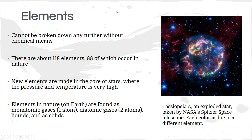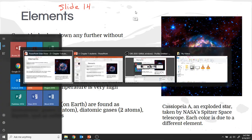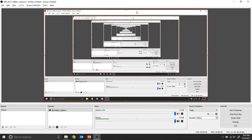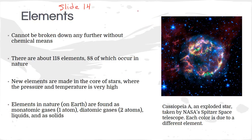We're going to pick up with slide 14 in chapter 1 lecture notes. In the last set of notes we learned that you can categorize elements based on their properties. An element is the simplest form of matter; you can combine them to make compounds. Two different elements make a compound, so for example hydrogen and oxygen make water.